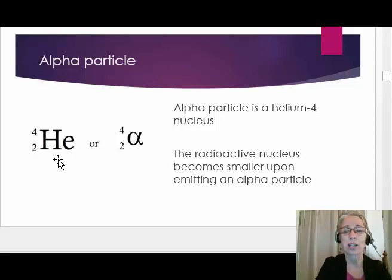The symbol for helium or the Greek letter alpha can be used to signify an alpha particle. We will use the mass and the atomic number along with the alpha or helium symbol. When a nucleus emits an alpha particle, the nucleus becomes smaller by two protons and two neutrons.